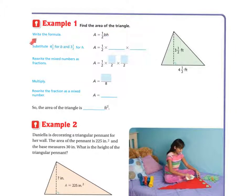All right, find the area of a triangle, write the formula. So again, our formula is area equals half base times height. So we're going to substitute the 4 and 1 fourths for the base, because there's my base, 4 and 1 fourths. And we're going to substitute 3 and 1 half for my height, because there's my height.